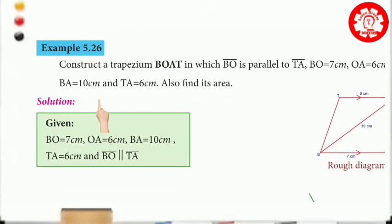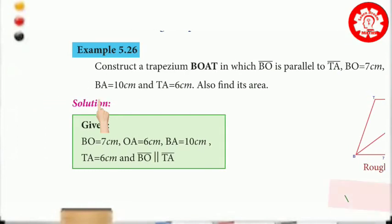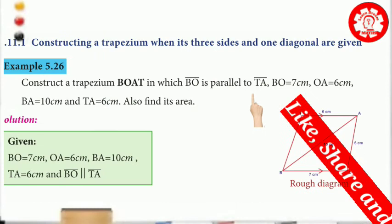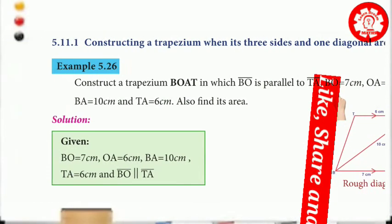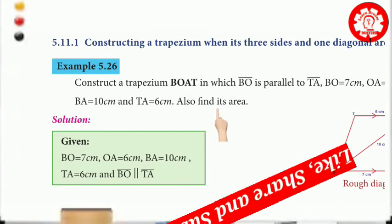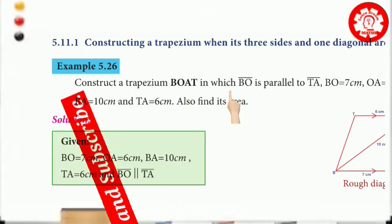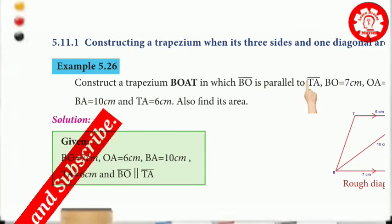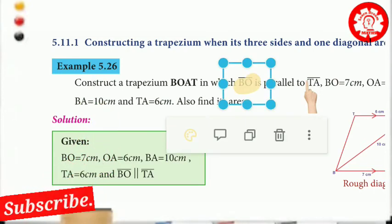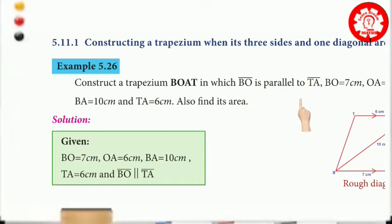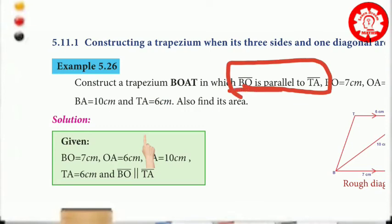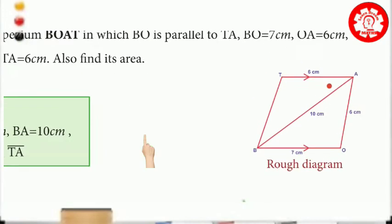Construct trapezium BOAT in which BO is parallel to TA. BO equals 7cm, OA equals 6cm, BA equals 10cm, and TA equals 6cm. Also find its area. We have a trapezium and we have to mention the parallel sides — BO and TA are parallel. Note this part — it is compulsory because we need to draw the rough diagram first.